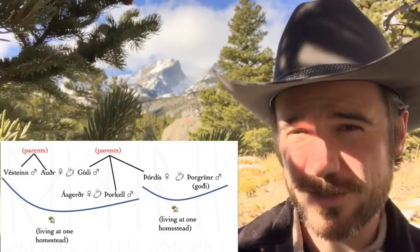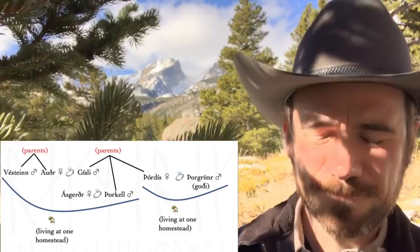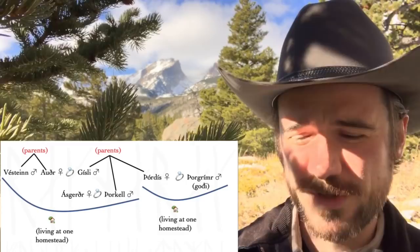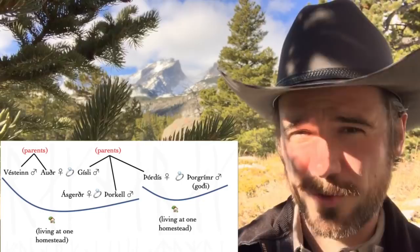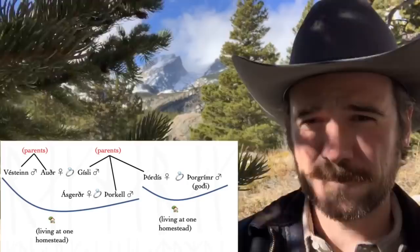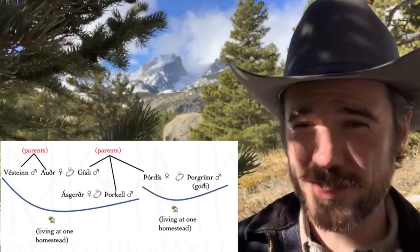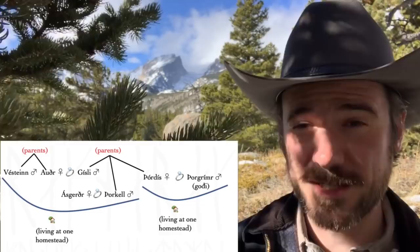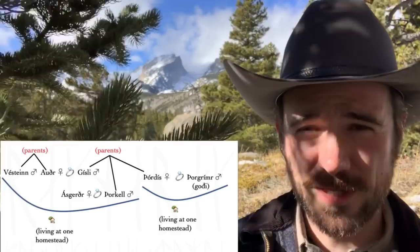All right, so Þórkell and his wife Ásgerðr actually move in during moving days with Þórgrímr and Þórðis, apparently to avoid Vestáin when he comes home. Þórkell doesn't want to live in the same house as this guy who once had a relationship with his wife. So soon enough, inevitably, Gísli hears that Vestáin has returned to Iceland.